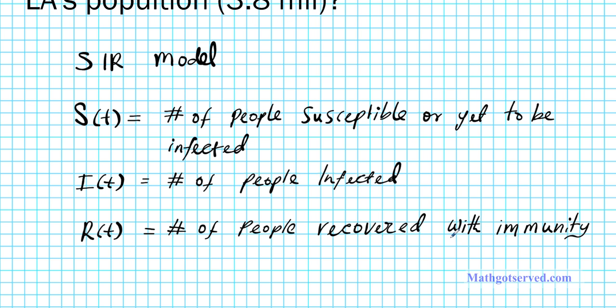The SIR model generates an equation that groups everybody in the population sample into their respective categories. The equation is N = S + I + R. N represents the total number of people in the population area you're looking at. In this problem we are looking at Los Angeles, so N is going to be 3.8 million — the total population.